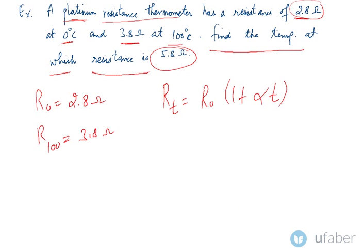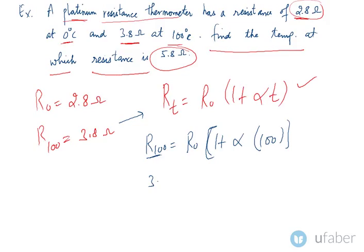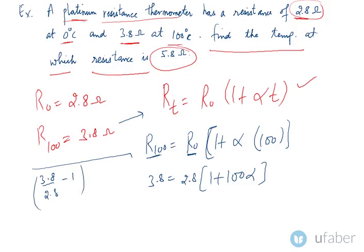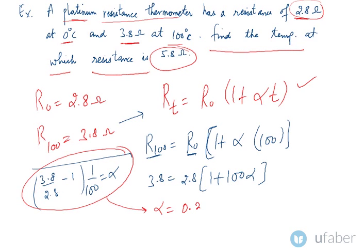This is the relation between the resistance at any temperature and the temperature itself. Putting the values in: R₁₀₀ = R₀(1 + α×100). We know R₁₀₀ = 3.8 and R₀ = 2.8, so 3.8 = 2.8(1 + 100α). Rearranging: α = (3.8/2.8 − 1) / 100, which gives α = 0.357 × 10⁻².